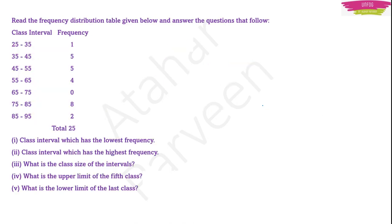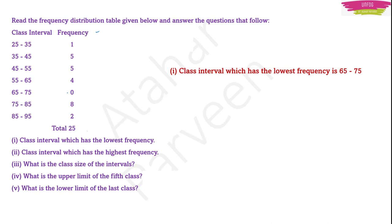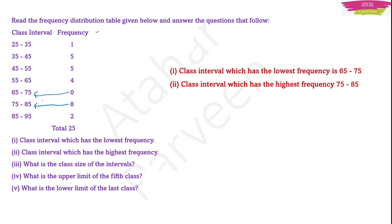Now let us try to understand all the terms we learnt in a frequency distribution table. The question is: read the frequency distribution table given below and answer the questions that follow. They have given class interval — this is an exclusive class interval — and frequency. First, class interval which has the lowest frequency: the lowest frequency is 0, and the corresponding class interval is 65 to 75. Next, class interval with highest frequency: 8 is the highest, and the corresponding class interval is 75 to 85.